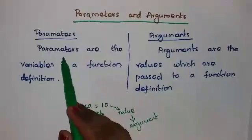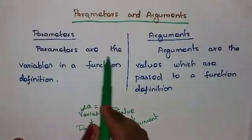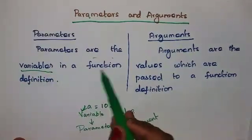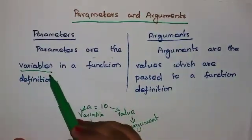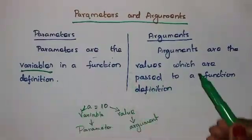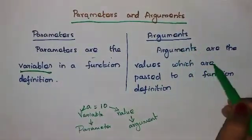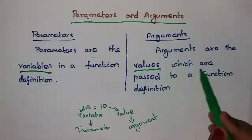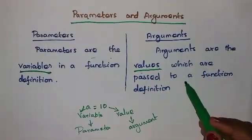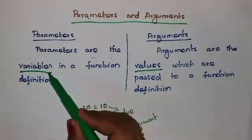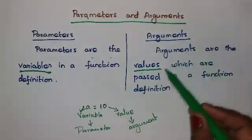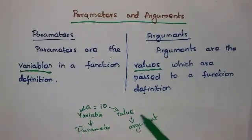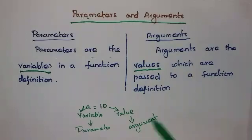See this definition: the parameters are the variables in a function definition. Parameters are variables. Arguments are the values which are passed to a function definition. So, parameters are the variables and arguments are the values. We call this variable as parameter and we call this value as argument.